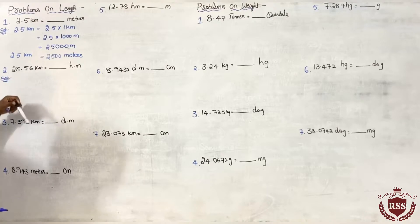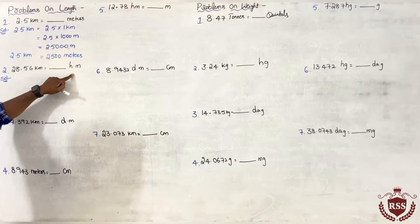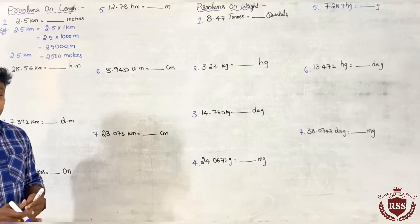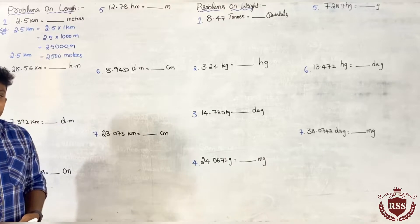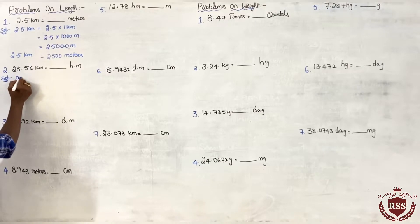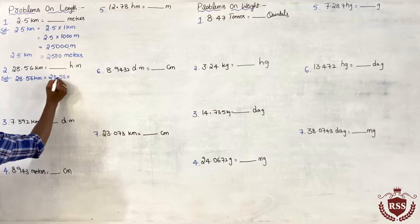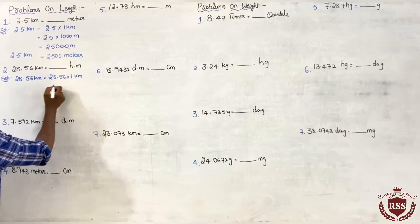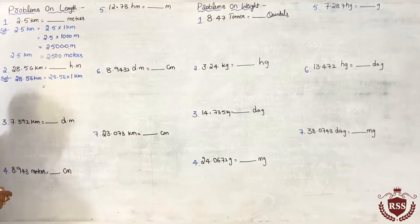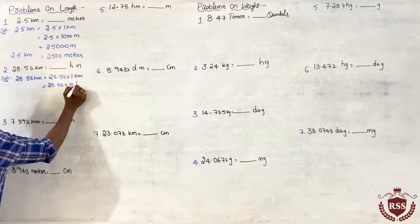Next question: 28.56 kilometers equals how many HM? HM means hectometers. So we have to convert kilometers into hectometers. 1 kilometer equals how many hectometers? 1 kilometer equals 10 hectometers. So 28.56 kilometers equals 28.56 into 1 kilometer, and 1 kilometer equals 10 hectometers, so it becomes 28.56 into 10 hectometers.